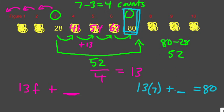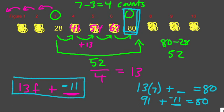I can just do the mathematics of this situation. This is really a one-step equation. 13 times 7 is 91 plus, I don't know, equals 80. What is that I don't know? That I don't know has to be negative 11. 91 minus 11 is 80. So here's my formula. 13f plus negative 11.